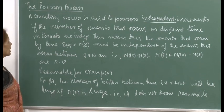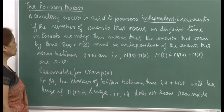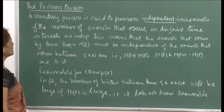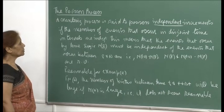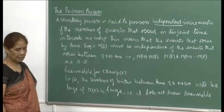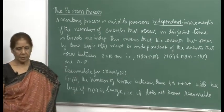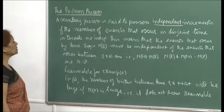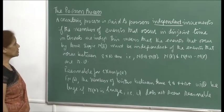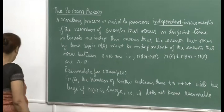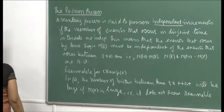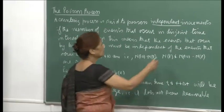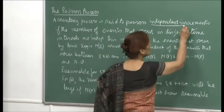While talking of the Poisson process, I said we have to first talk about a counting process. There should be some norms that have to be followed for the counting process. The first one is that it should have independent increments — that means the number of events that occur in disjoint intervals are independent.